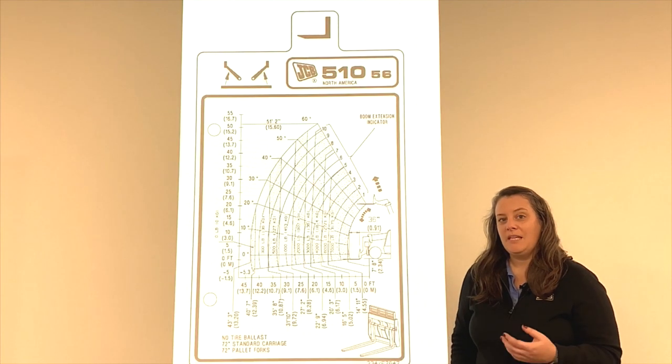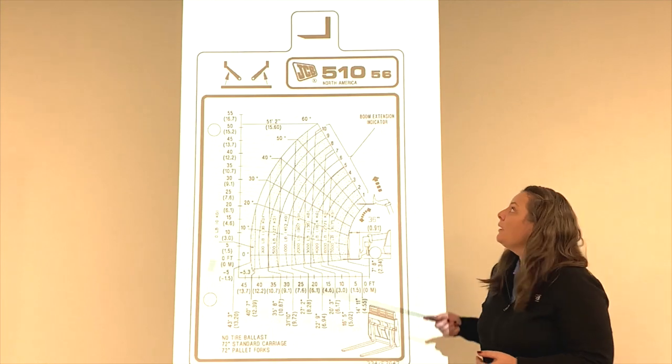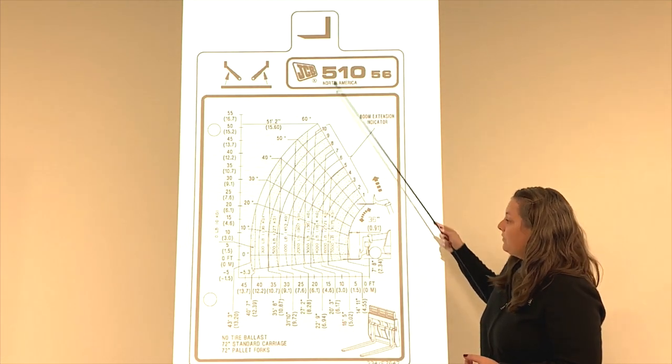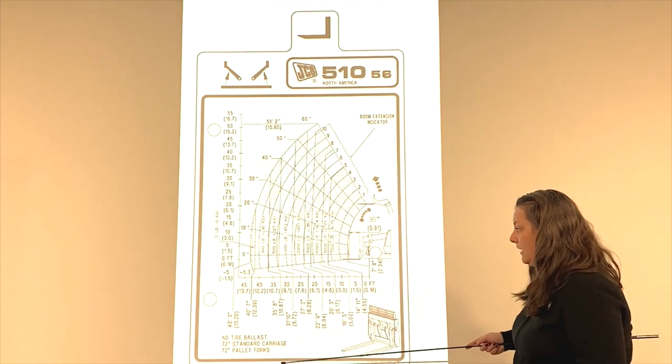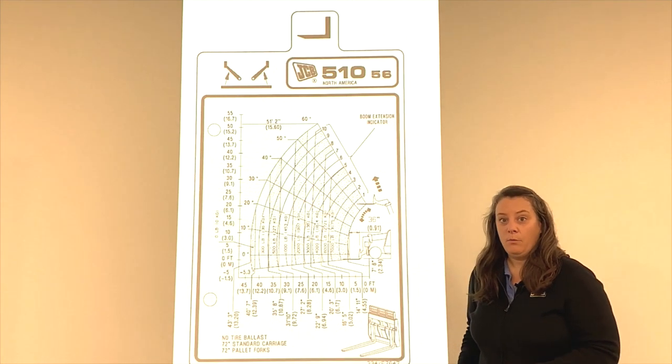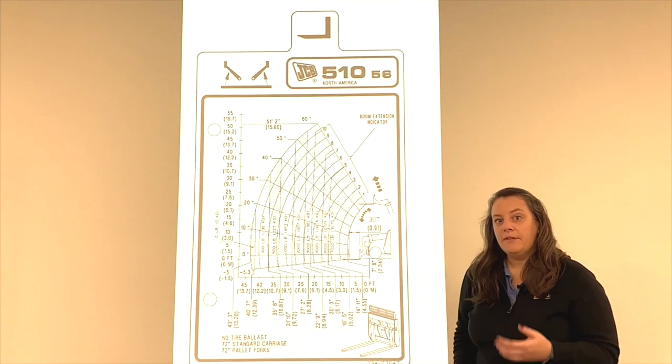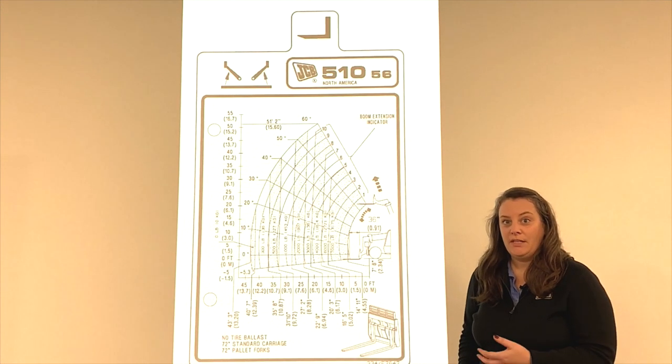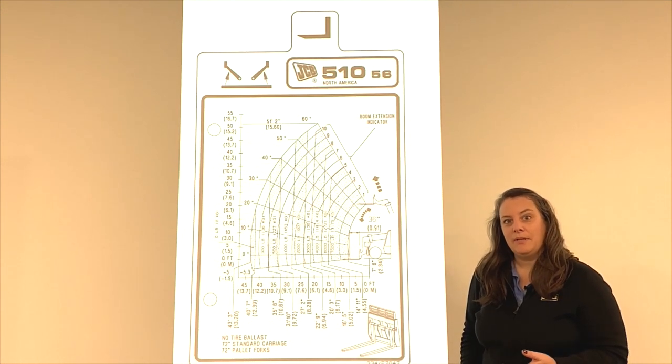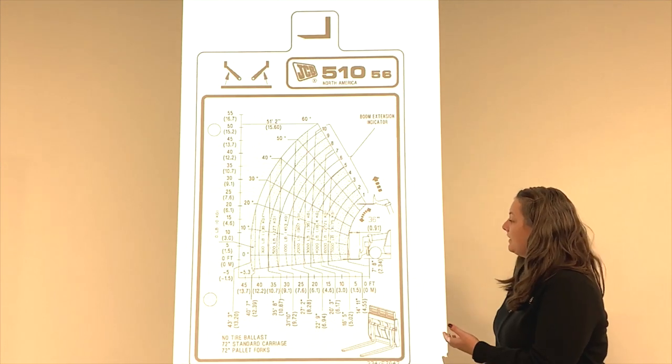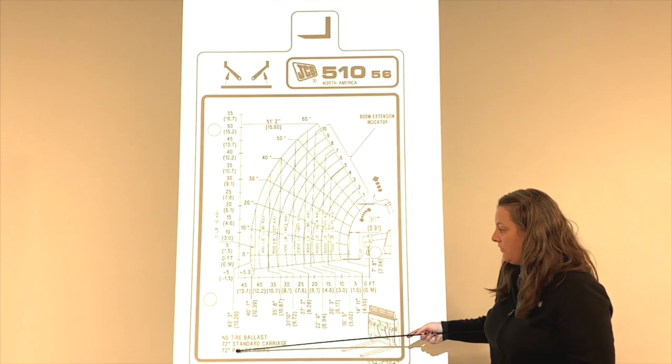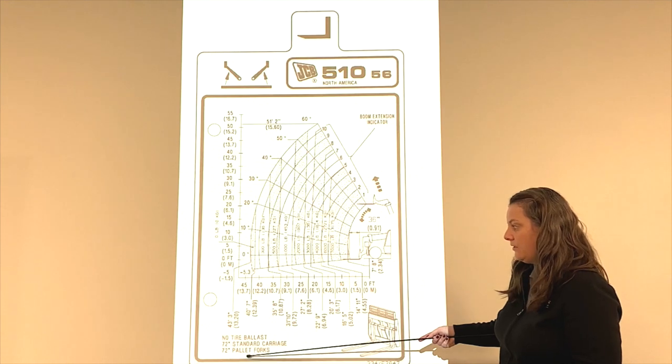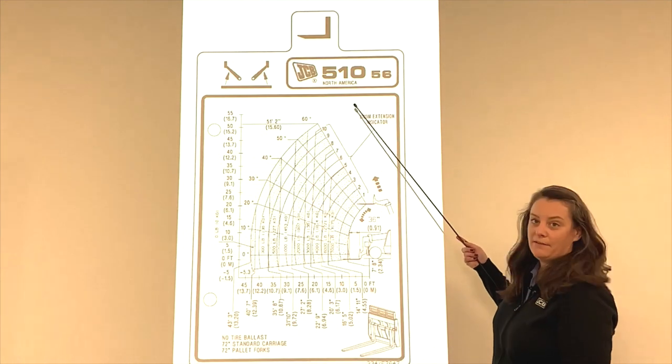First off, each load chart is model and attachment specific, so you need to make sure that you're using the right one. Every machine should have a stack of load charts in the machine, always with the machine, and they're going to be separated by attachment. The one we're looking at today is a 72-inch carriage with 72-inch pallet forks on a 510-56.